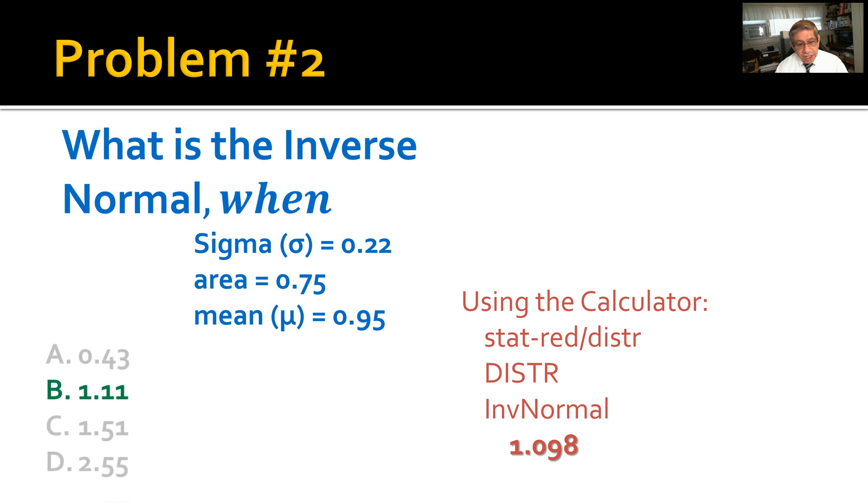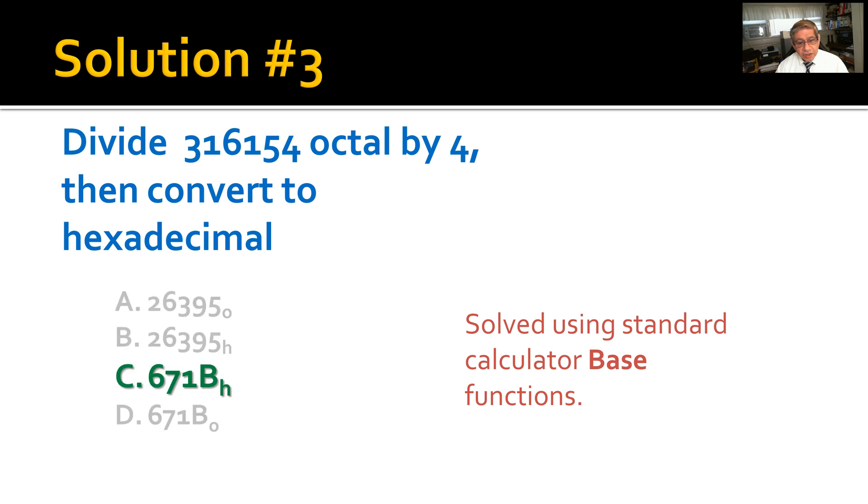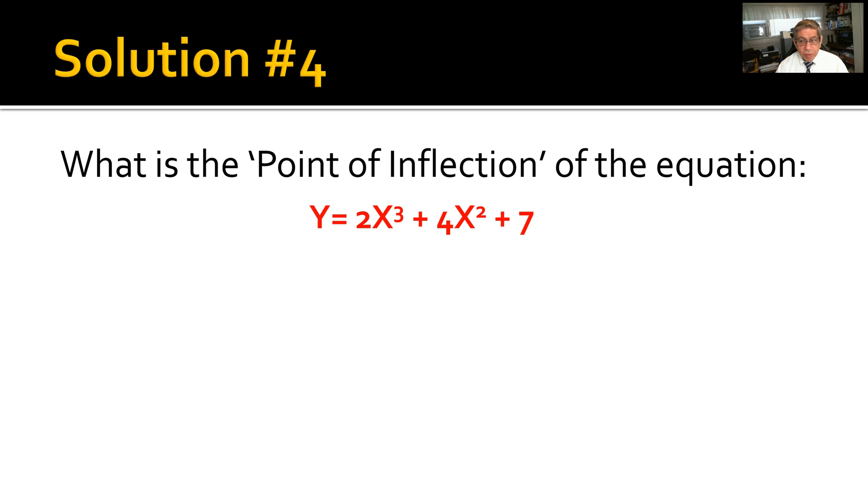Solution number three: Divide 316154 octal by 4, then convert the result to hexadecimal. This is solved using standard calculator base functions, and the answer comes out to C671B in hex.